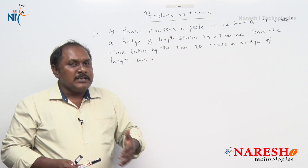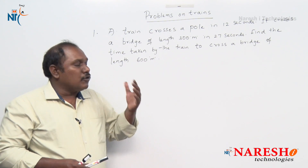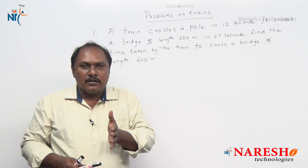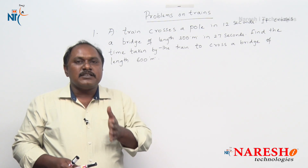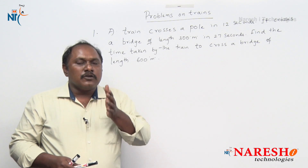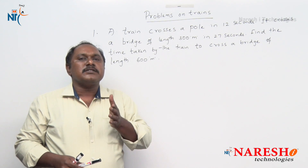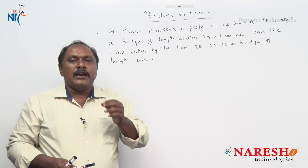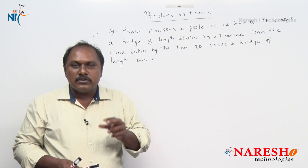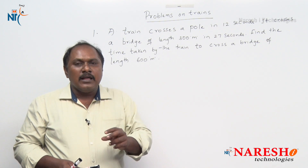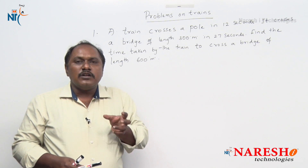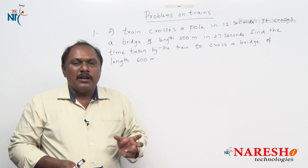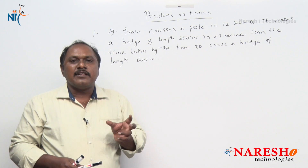Once again, the two basic points are: to cross a pole — which can be a pole, tree, or any object whose length is negligible with respect to the length of the train — a train has to travel a distance equal to the length of the train. And to cross a bridge — which can be a bridge, a platform, a tunnel, or any other train — a train has to travel a distance equal to the length of the bridge plus the length of the train.